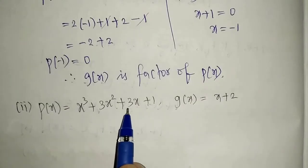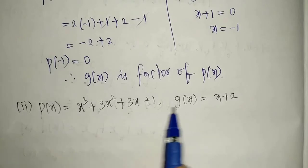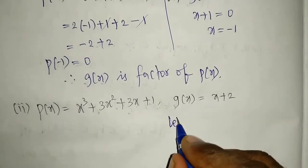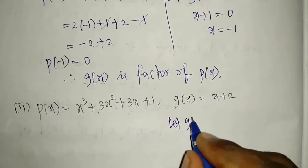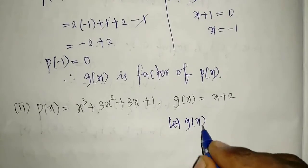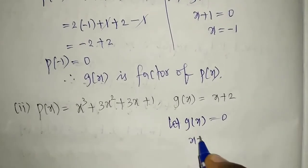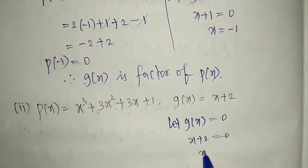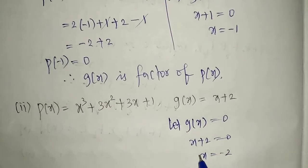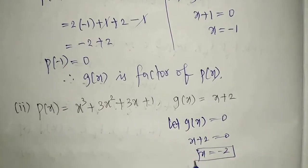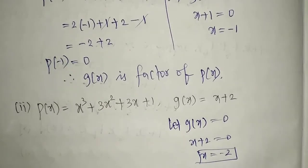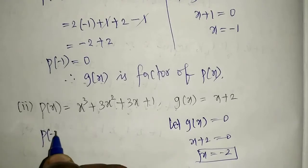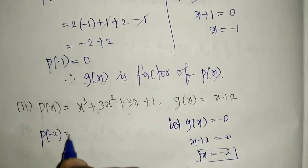For case 2: p of x equals x cubed plus 3x squared plus 3x plus 1, and g of x equals x plus 2. Again, take g of x equal to 0. So x plus 2 equals 0, giving x equals minus 2. We substitute this value into the given polynomial.